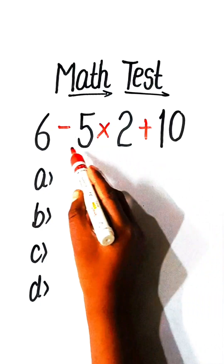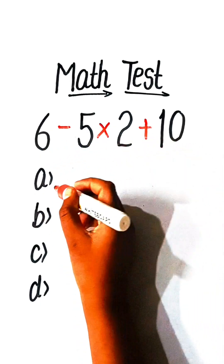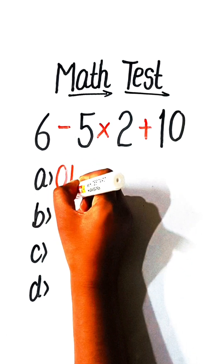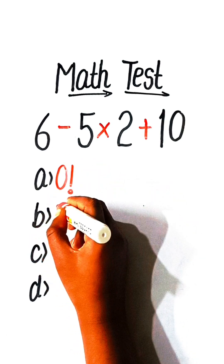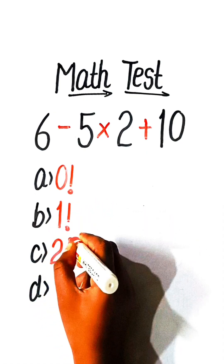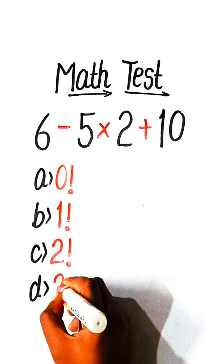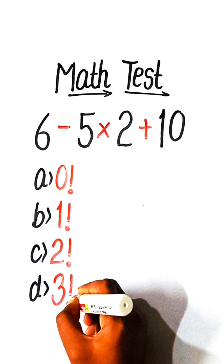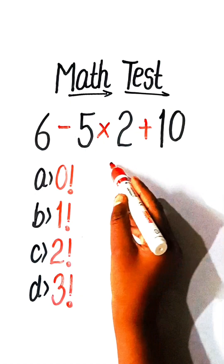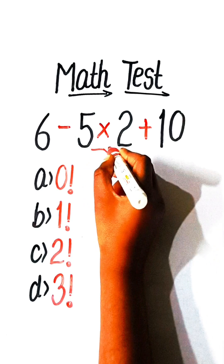In this video we will solve this basic math equation: 6 minus 5 multiply by 2 plus 10 equals to what? Option A: 0 factorial, Option B: 1 factorial, Option C: 2 factorial, or Option D: 3 factorial. So let's solve this — first we have to multiply.